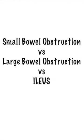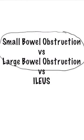So we'll start off with separating bowel obstructions into two main categories. There are functional obstructions and mechanical obstructions. Now small bowel and large bowel obstructions fall under mechanical obstruction, whereas ileus falls under functional obstruction.